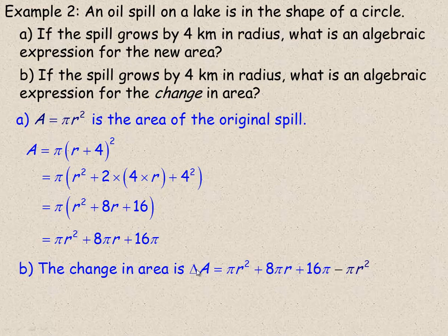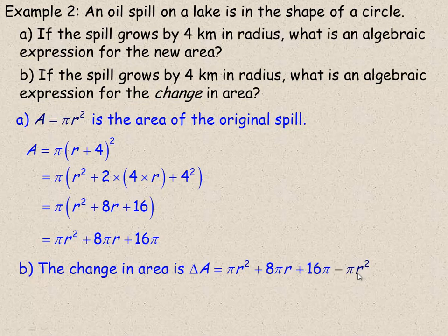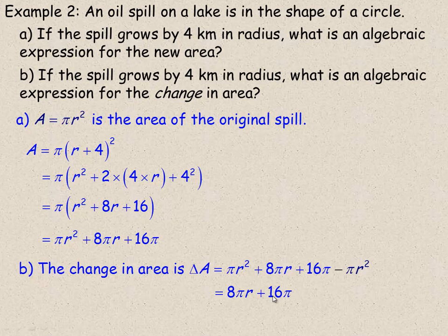To find the change in area — delta represents the change in — the change in area is the new area minus the original area. The new area is pi r squared plus 8 pi r plus 16 pi, minus the original area pi r squared. The two pi r squareds subtract to zero, so the change in area is 8 pi r plus 16 pi. That's how much the area has increased by, and that's the end of the lesson.